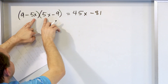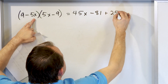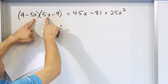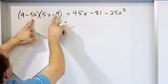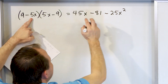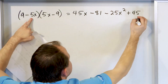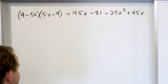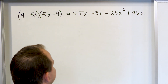The inner terms: negative 5x times 5x gives you 25, and x times x is x squared. But notice it's negative 5 times positive 5, so this is a negative sign — negative 25x squared. Then the last terms: negative 5x times negative 9 gives you positive 45x. So you have 45x minus 81 minus 25x squared plus 45x.